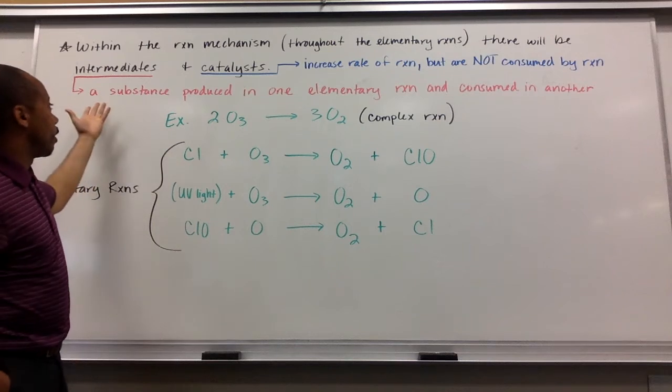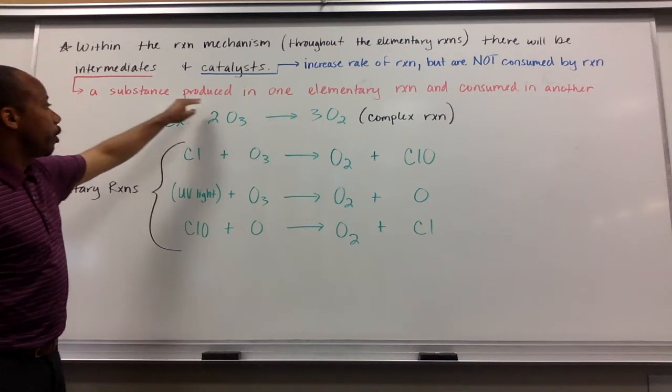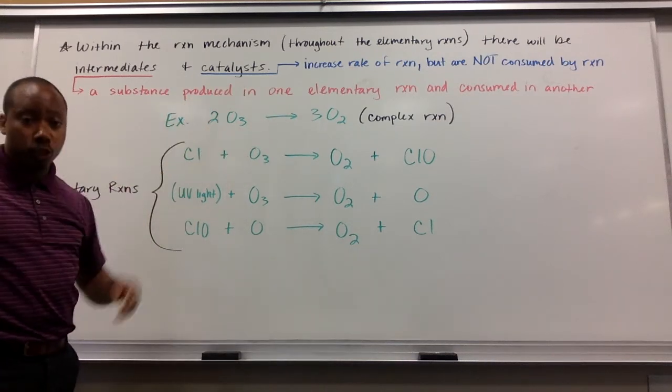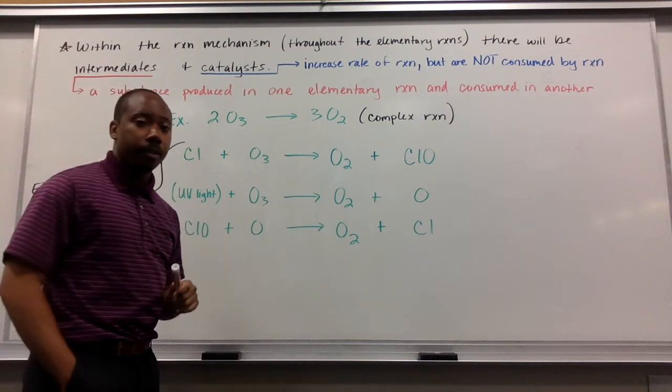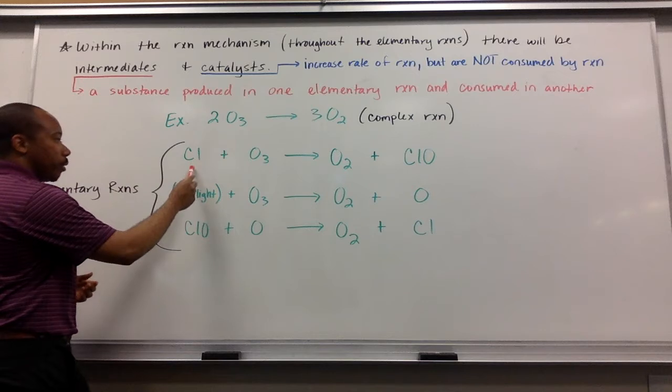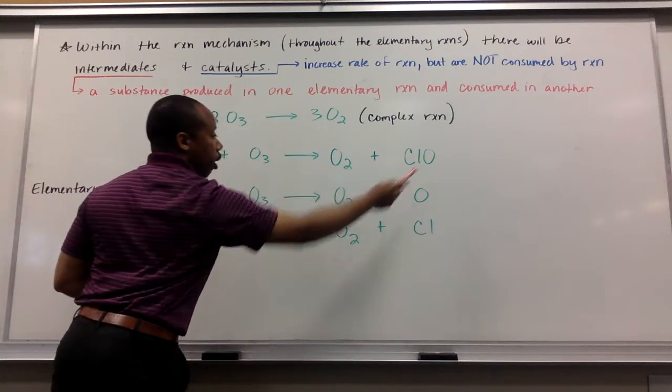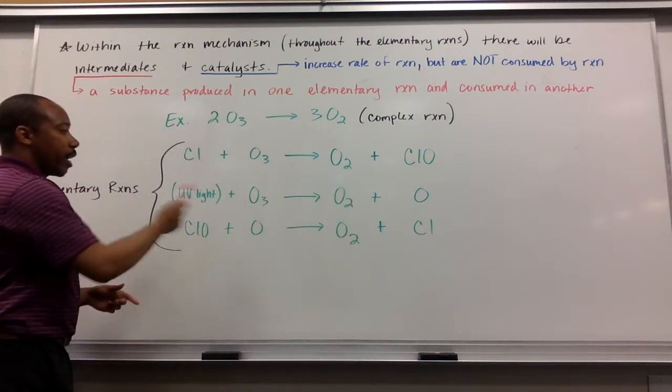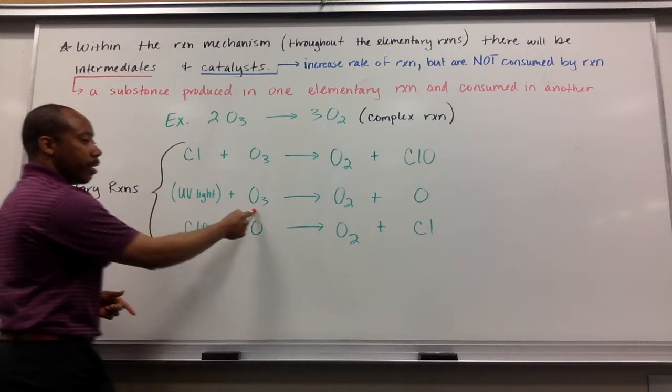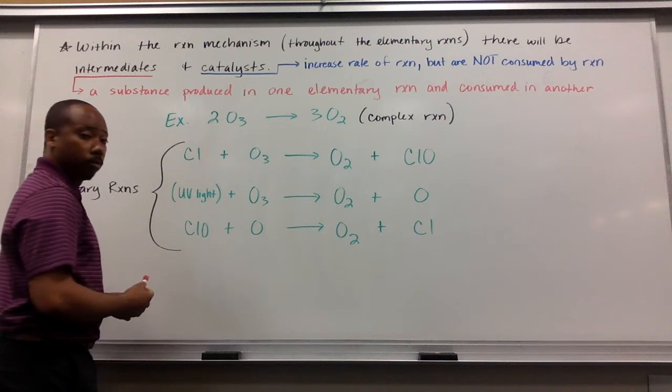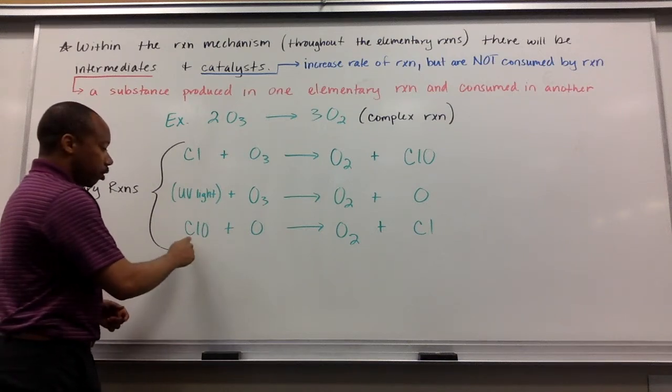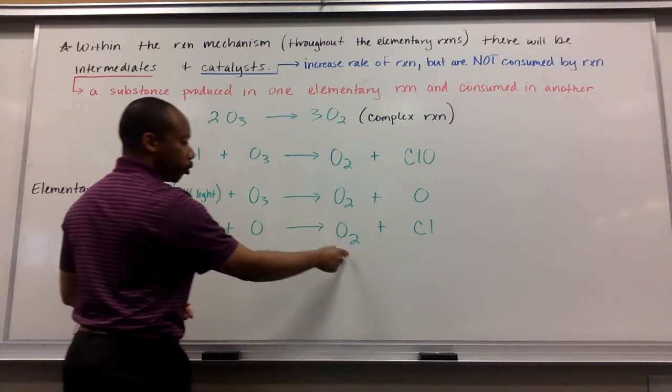Let's first look at the intermediates, meaning substances that are produced in one elementary reaction but consumed in another. We'll highlight that in red like the definition here. So as we look through, we have Cl plus O3 goes to O2 plus ClO. Then in my next reaction, we have O3 going to O2 plus O. Then my third reaction, ClO plus O goes to O2 and Cl.